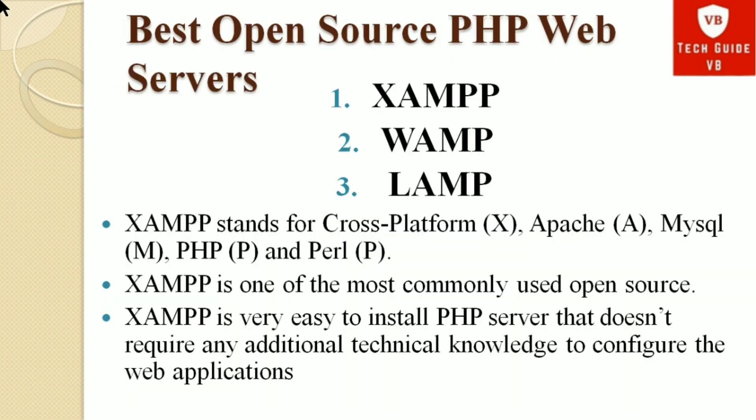The best open source PHP servers are XAMPP, WAMP, and LAMP. XAMPP is cross-platform and works on Windows, Linux, and macOS. WAMP is for Windows only and LAMP is for Linux only. More preferably, XAMPP is used as a PHP web server.